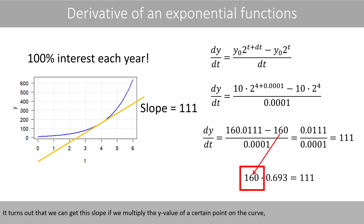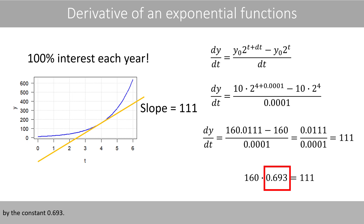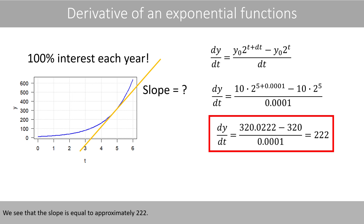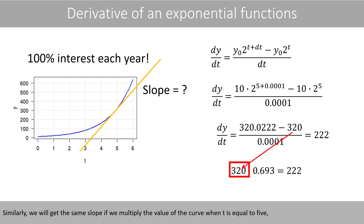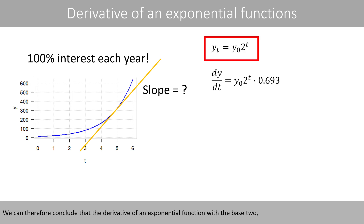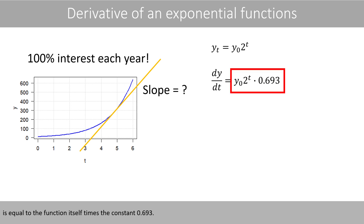It turns out that we can get this slope if we multiply the Y value of a certain point on the curve by the constant 0.693. Likewise, we can estimate the slope of the line when T is equal to 5, and the slope is equal to approximately 2.22. Similarly, we will get the exact same slope if we multiply the value of the curve when T is equal to 5 by the same constant 0.693. We can therefore conclude that the derivative of an exponential function with the base 2 is equal to the function itself times the constant 0.693.